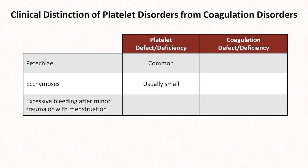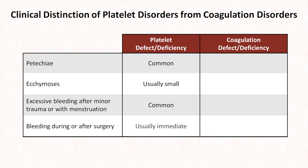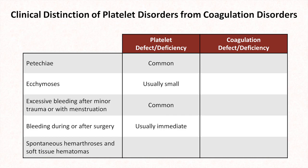Excessive bleeding after minor trauma or with menstruation is common. Bleeding during or after surgery is usually immediate. And last, spontaneous hemarthrosis, which is bleeding into a joint space, and soft tissue hematomas are rare.